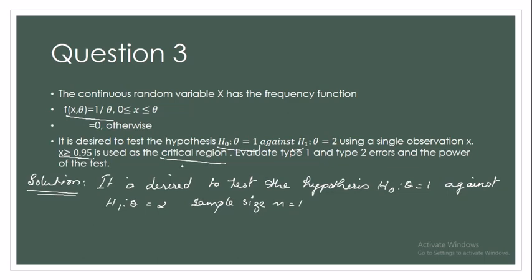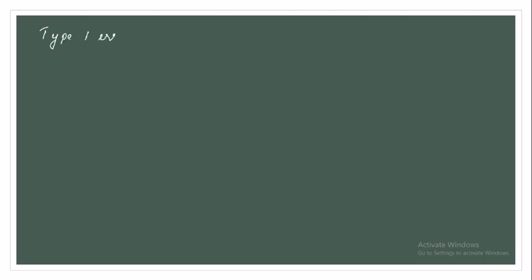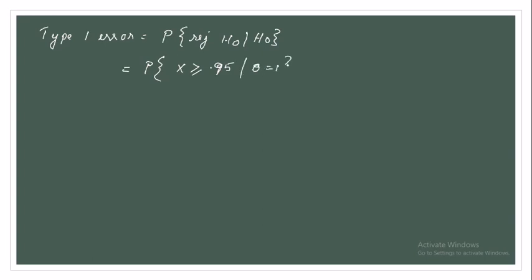The critical region given in the question is x ≥ 0.95. Now let's find the Type 1 error. Type 1 error is equal to the probability of rejecting H₀ given H₀, which equals the probability of x ≥ 0.95 given θ = 1.